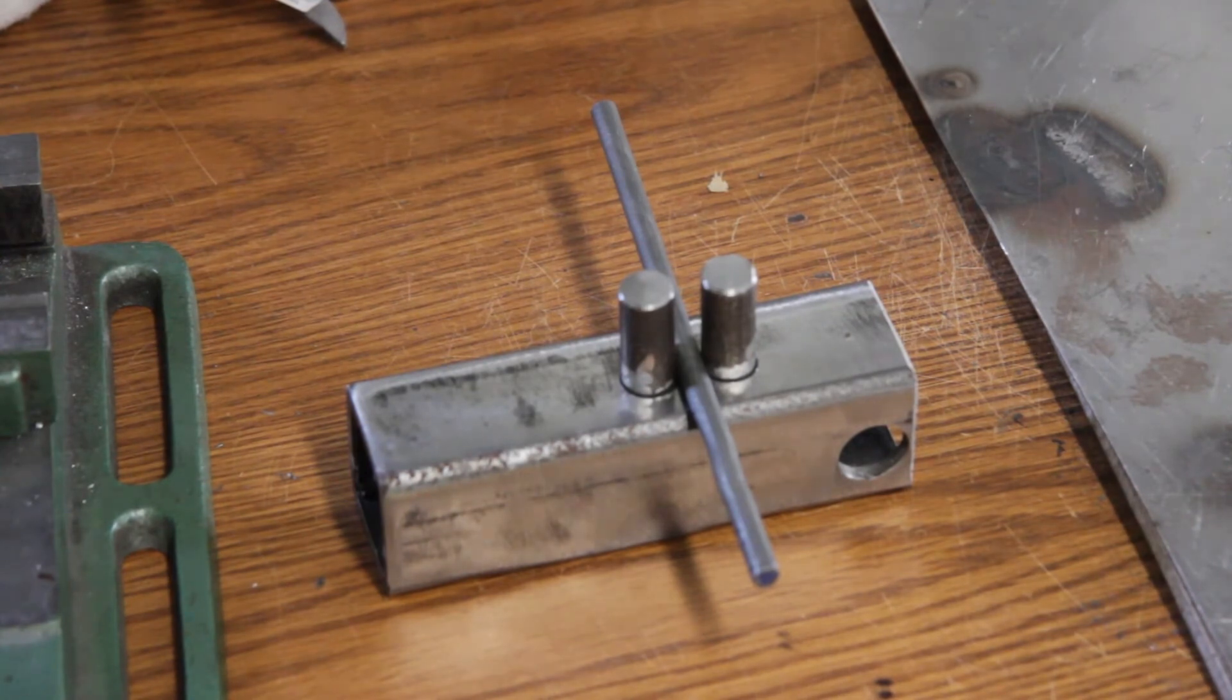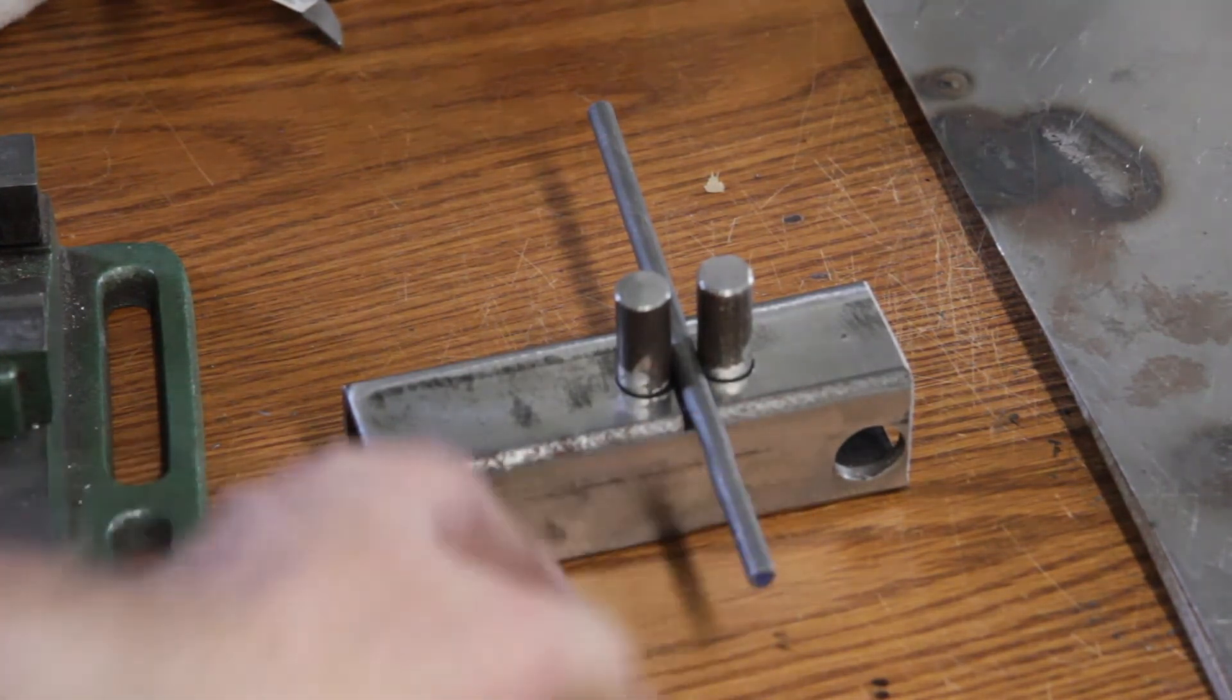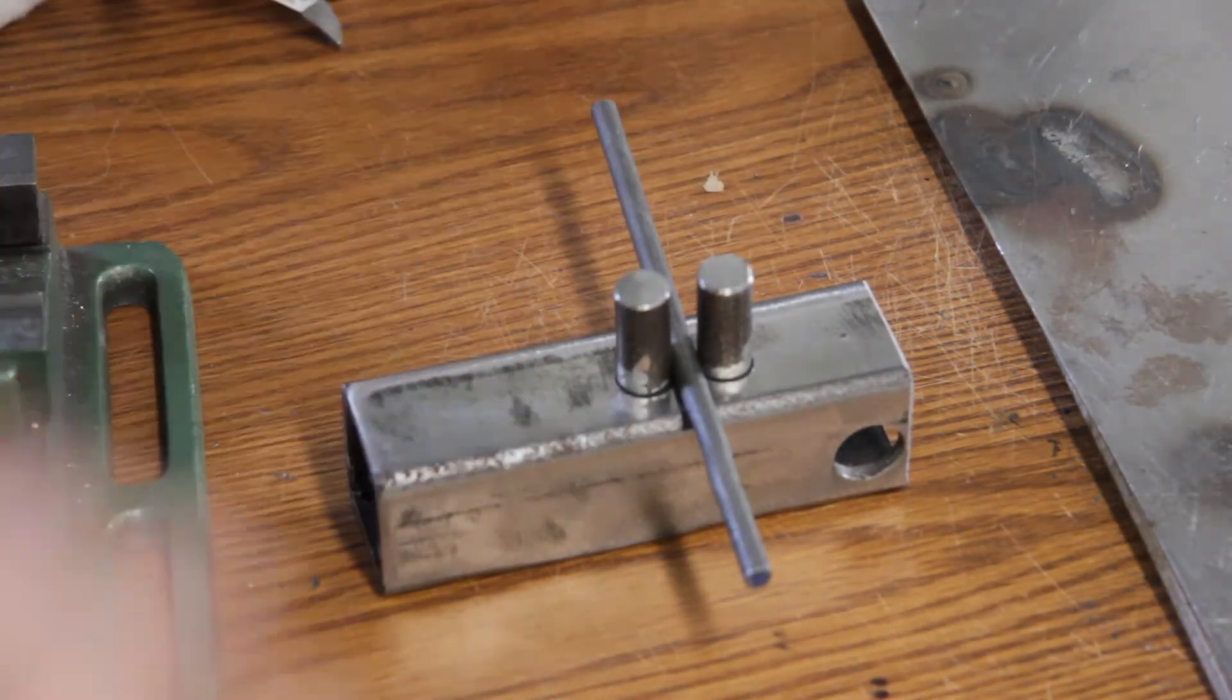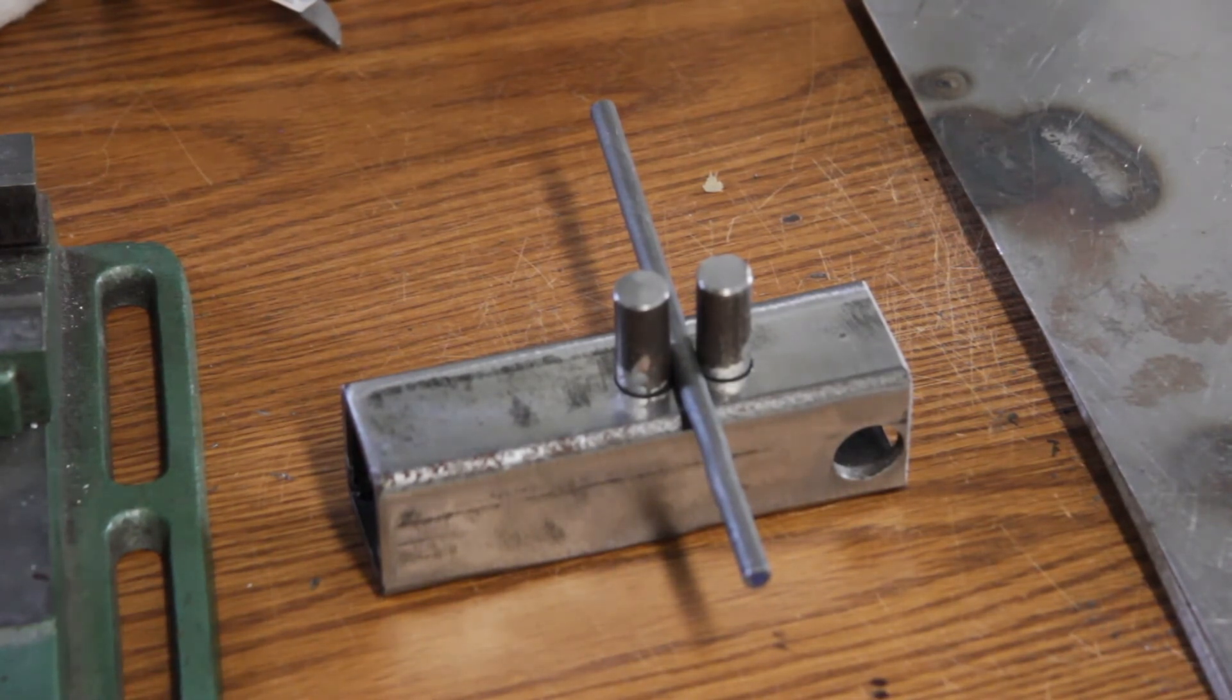We've cut the half inch rod down to size. We have it mounted in the square tube. We have a piece of quarter inch in between. We'll use a magnet to hold those in place while we tack up the half inch rods. Right now I will clean everything up with some paint thinner, and then we'll do the tack welding and the welding of the rod. We'll show you the finished product.